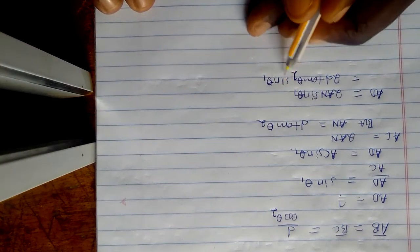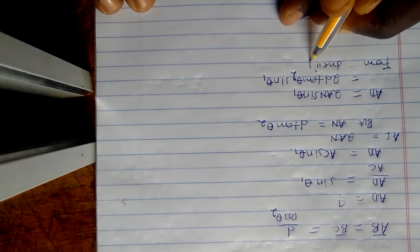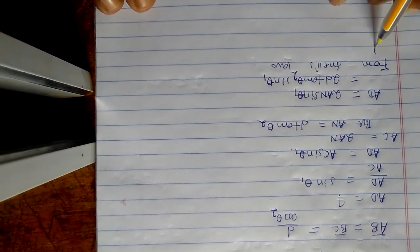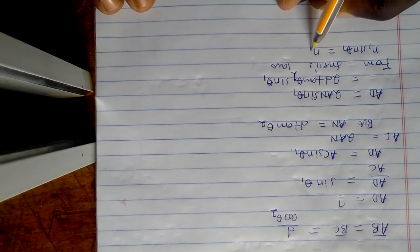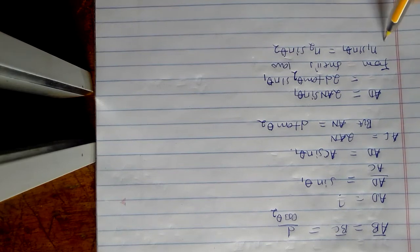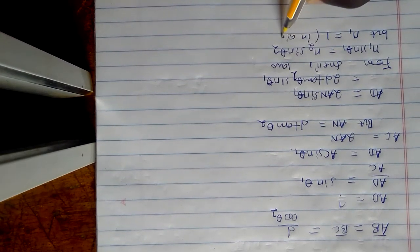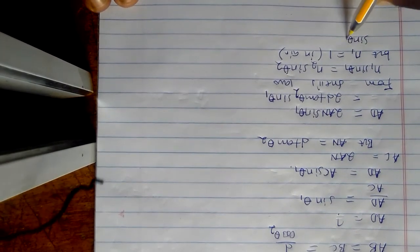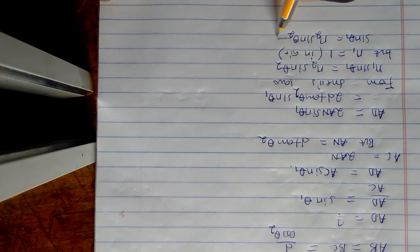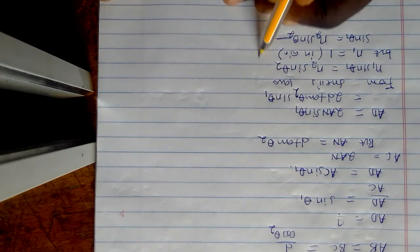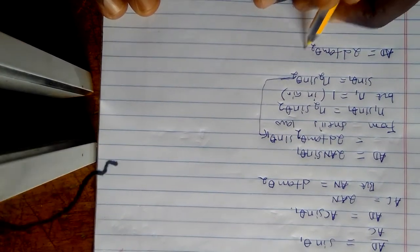Now I need to simplify using sin theta2. From Snell's law, N1·sin theta1 equals N2·sin theta2. Since N1 equals 1 because the light is in air, we get sin theta1 equals N2·sin theta2. So AD equals 2D·N2·tan theta2·sin theta2.